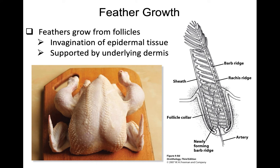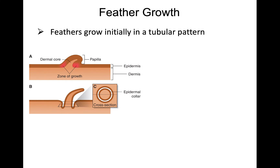Feathers grow from follicles, which are invaginations of the epidermal tissue. The follicles are not evenly spread across the body — you can see on a plucked chicken that the bumpy regions are where follicles were. Feathers grow initially in a tubular pattern, like a little bump coming out of the follicle, with growth occurring in a ring-like epidermal collar structure.